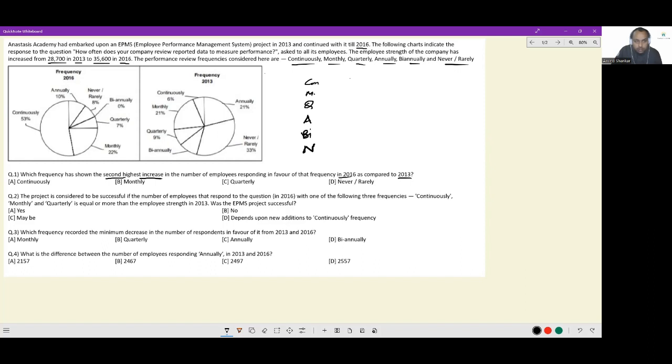Let's check: continuously was previously 6, now is 53; monthly is previously 21, now is 22; quarterly was previously 9 and now is 7. Then annual was previously 21, now is 10; biannual, previously the number is unknown, but new number is zero. And never rarely was 33 here and 8 here.